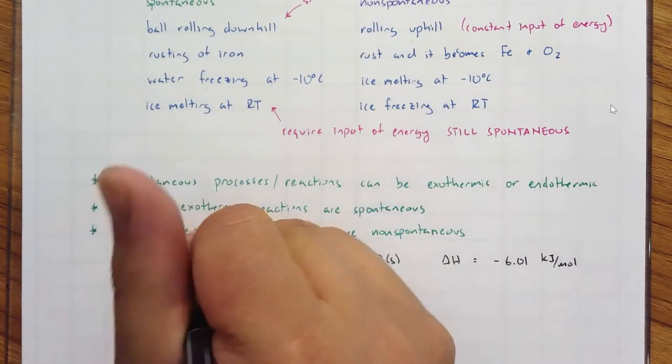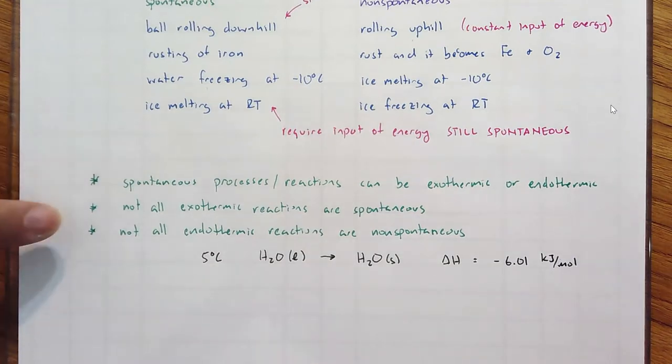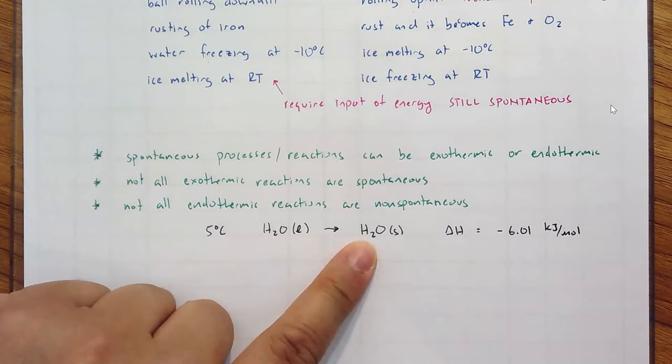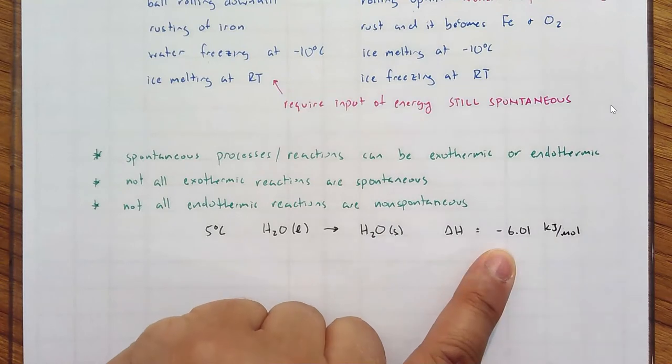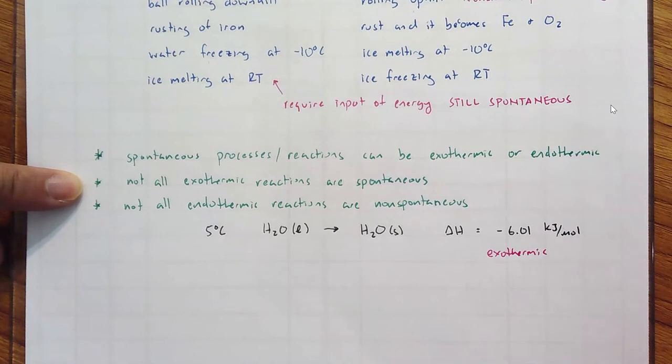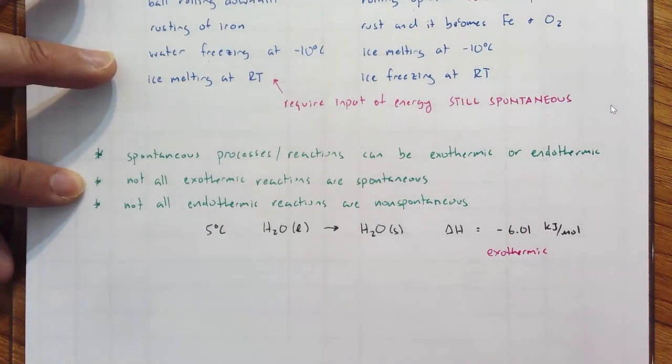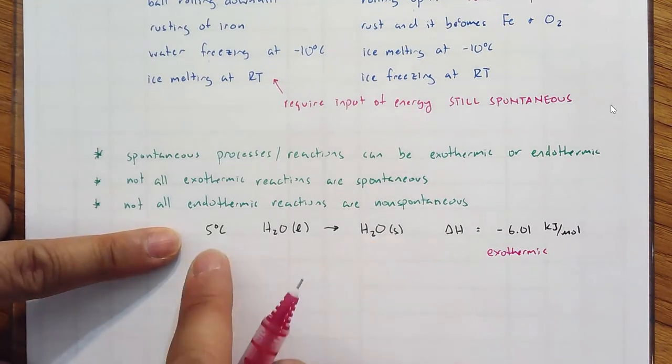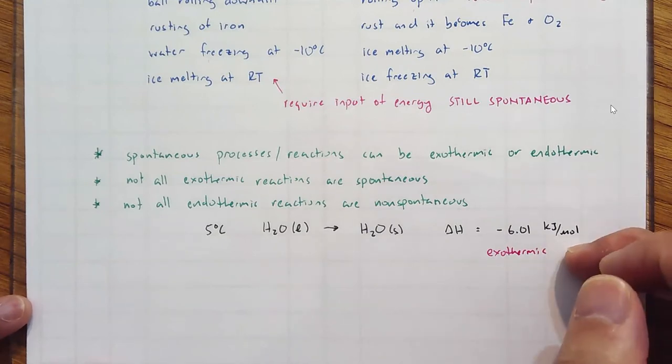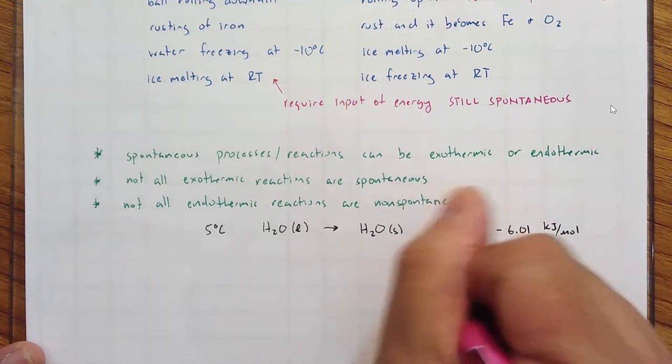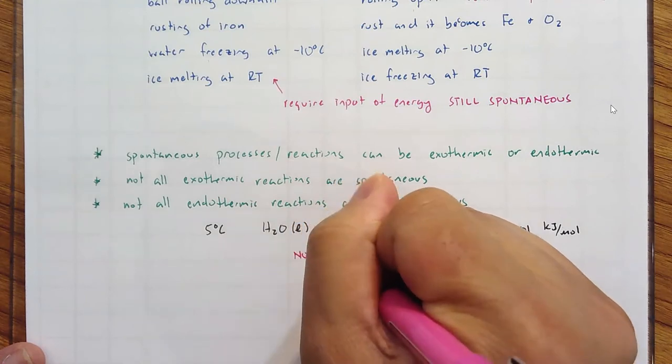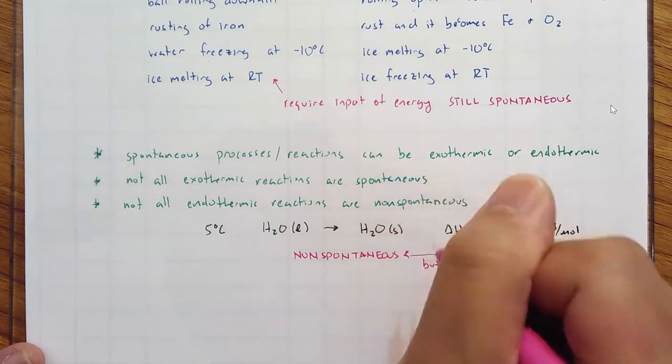Let's pretend we have this at 5 degrees C. Water going to ice is definitely exothermic - you're losing heat. Many times an exothermic reaction is spontaneous, but this does not happen spontaneously at 5 degrees C. Even though the freezing is exothermic, this is one case where it's exothermic but non-spontaneous.